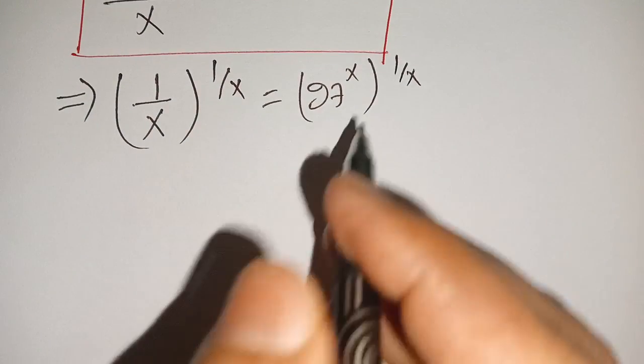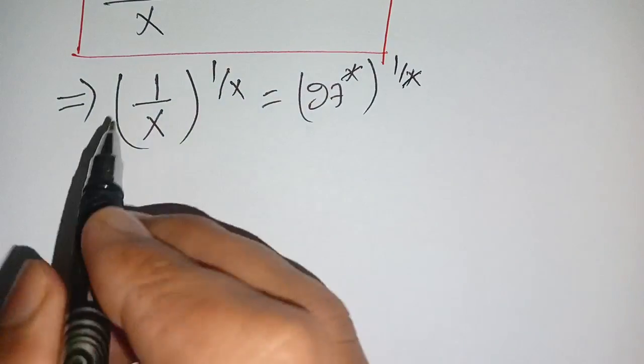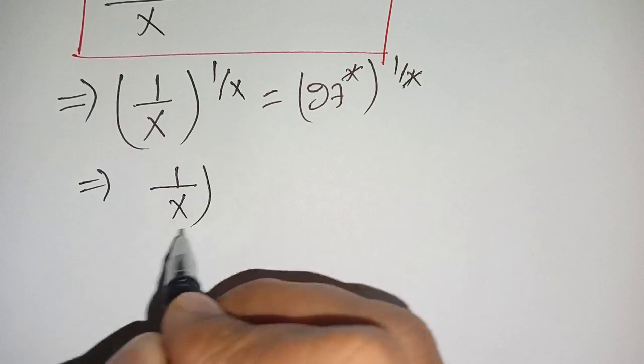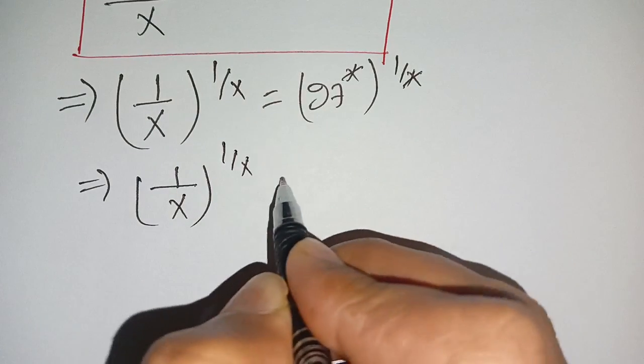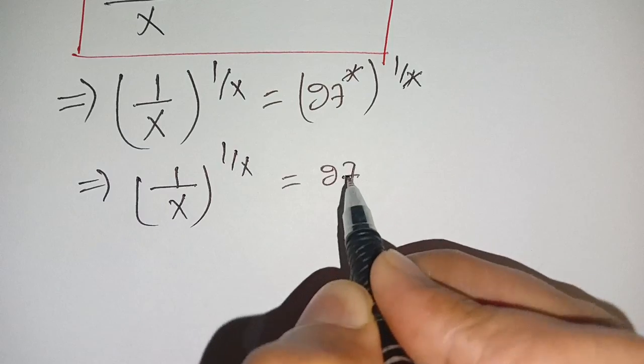Now, we can cancel out this x by this x. We get 1 divided by x whole power 1 divided by x is equal to 27.